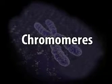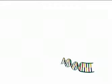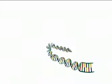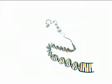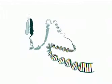Chromomeres are bead-like bodies over the chromonema. The regions between chromomeres are called interchromomeres. Chromomeres are especially obvious in polytene chromosomes, where they become aligned side by side, constituting the chromosome bands. These tightly folded regions of DNA are of considerable interest because they may correspond to the units of genetic function in the chromosome. At metaphase, the chromosome is tightly coiled and the chromomeres are no longer visible.